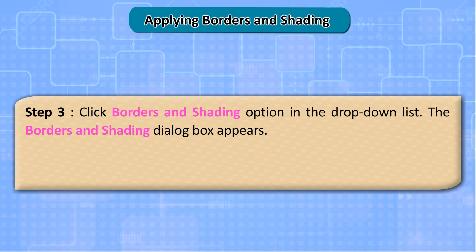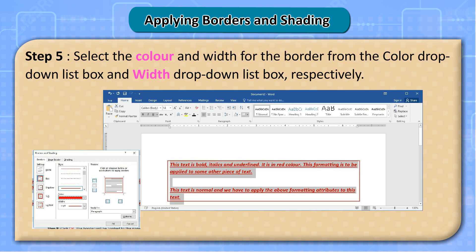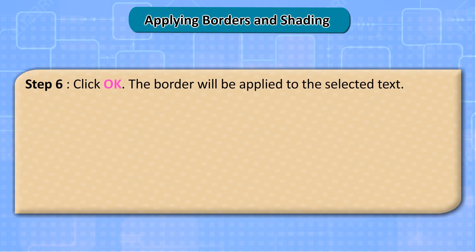The Borders and Shading dialog box appears. Step 4: Select the desired border styles from the Setting section and the line style from the Style list box. Step 5: Select the color and width for the border from the Color drop-down list box and Width drop-down list box, respectively. Step 6: Click OK.